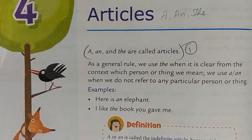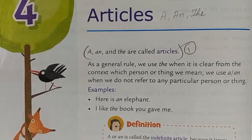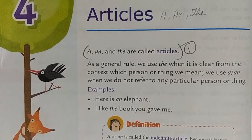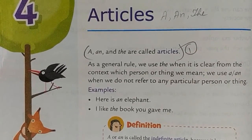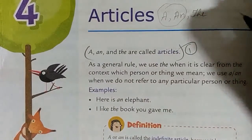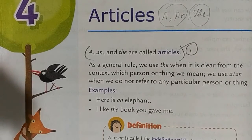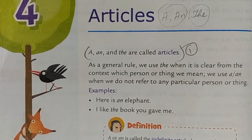When we are clear about something, we use 'the' before it. We use 'a' or 'an' when we do not refer to any particular person or thing — it is not pointing out a particular person or thing. 'A' and 'an' are indefinite articles, while 'the' is the definite article. We use 'the' when we are sure about the context.